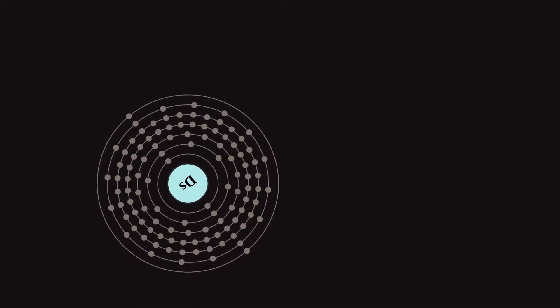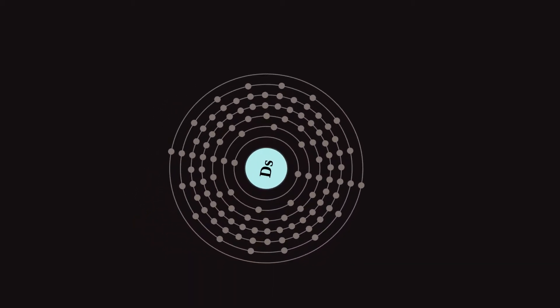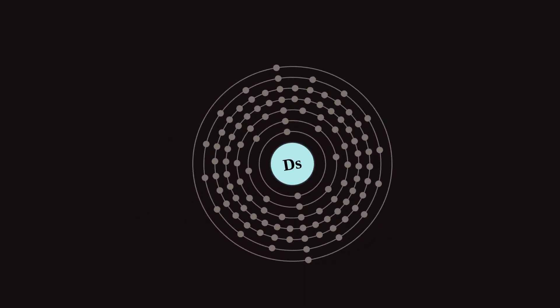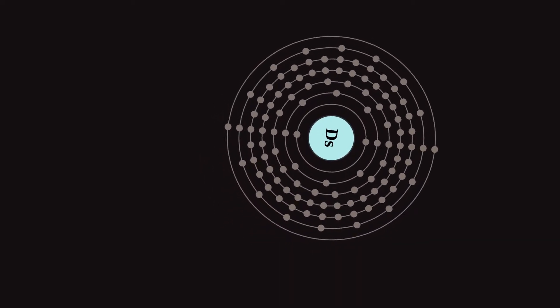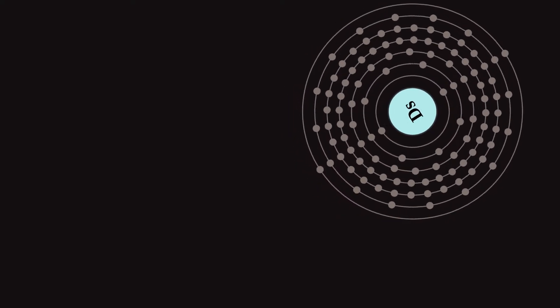Darmstadtium was first created in 1994 by the GSI Helmholtz Center for Heavy Ion Research near the city of Darmstadt, Germany, after which it was named. In the periodic table, it is a d-block transactinide element.